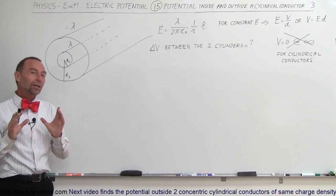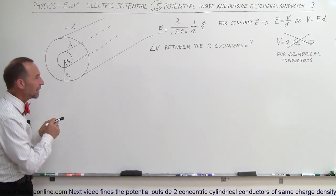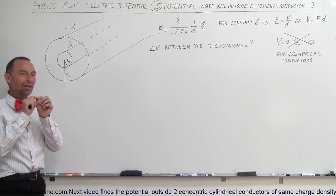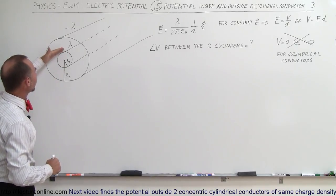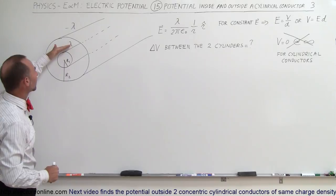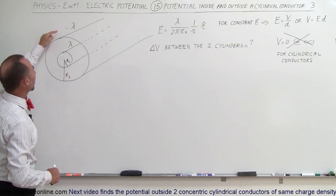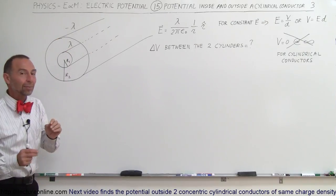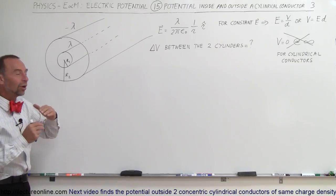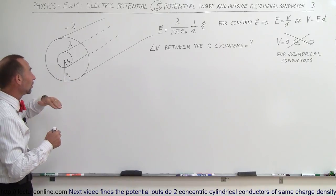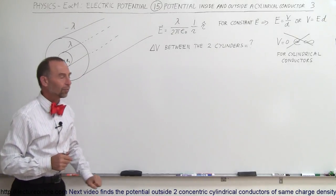Here we're going to take a look at something a little bit different. We have two concentric — meaning they have the same center — cylindrical conductors. The inside one has a positive linear charge density lambda, the outside one has a negative linear charge density lambda, and let's say it's the same charge density, one is positive, the other is negative. What's the potential difference between the two cylinders?